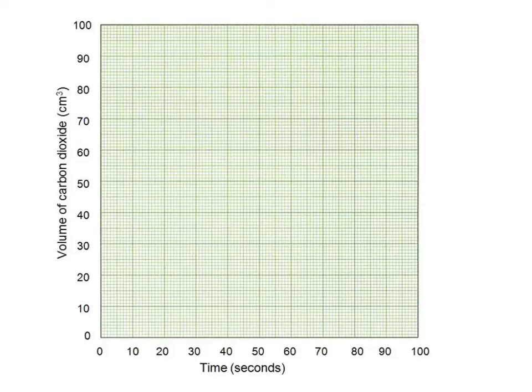You then plot your results on a graph of time along the bottom against the volume of carbon dioxide on the side. Each of the graphs would give you a curve a little like this, for example this one at 20 degrees C. At 30 degrees C it might look like this, and at 40 degrees C it might be a little steeper. The steepness of the graph gives you a measure of the rate of reaction. The more steep the graph is at the beginning, the faster the initial rate of reaction. This shows that the higher the temperature, the faster the rate of reaction.